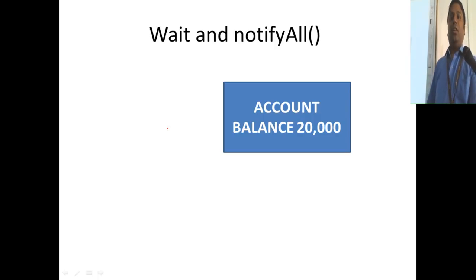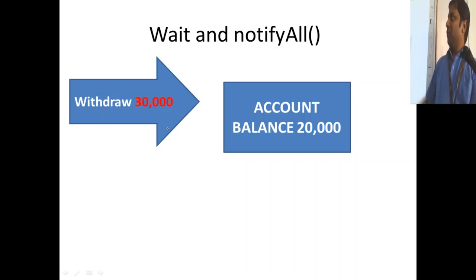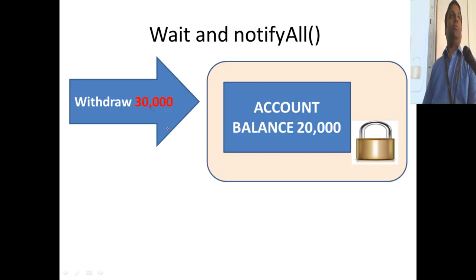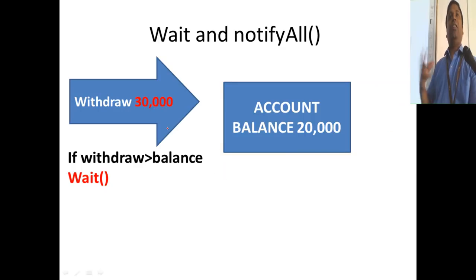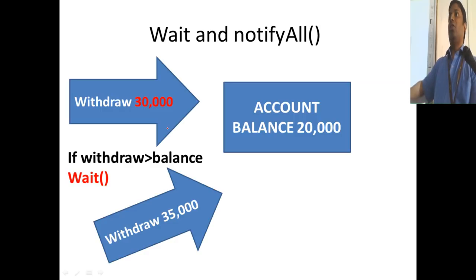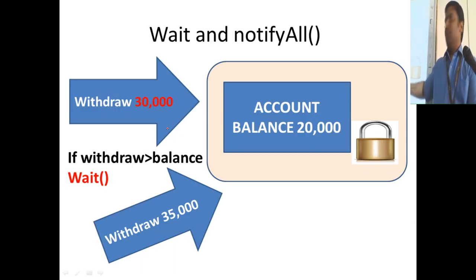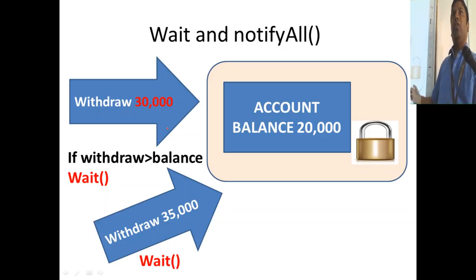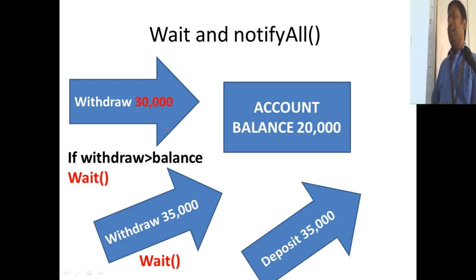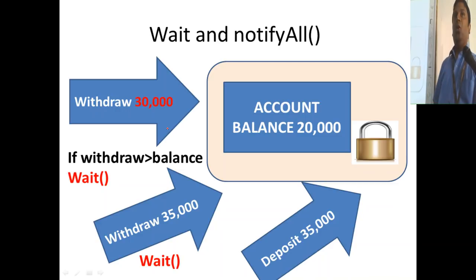We have an account satish with balance 20,000. A withdraw thread wants to withdraw 30,000 — it acquires the lock, checks the condition, and since withdrawal is greater than balance, calls wait() and releases the lock. Another withdrawal thread comes in wanting to withdraw 35,000 — it locks the object, but again 35,000 > 20,000, so it also goes to wait and releases the lock. A deposit thread then comes in and deposits 35,000, bringing the balance to 55,000.